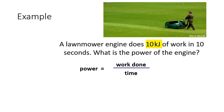For example, a lawnmower engine does 10 kilojoules of work in 10 seconds. Since kilojoules are not the standard unit, we convert: 1 kilo means 1000, so 10 kilojoules equals 10,000 joules. Then 10,000 divided by 10 seconds gives a power of 1000 watts.